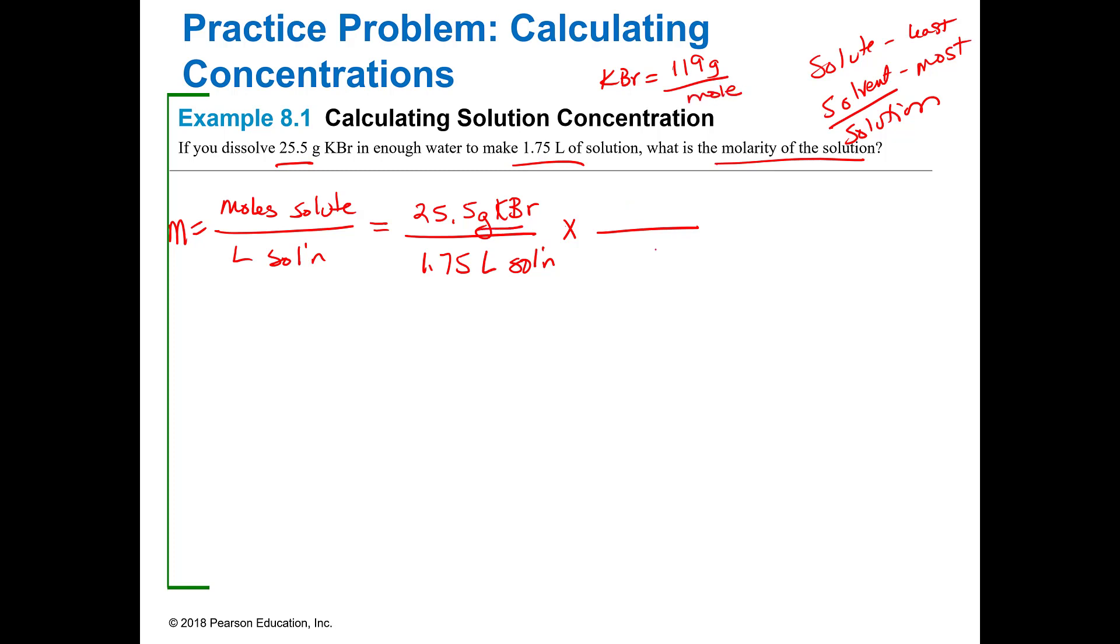So I've got grams of KBr here and I've got to get rid of that. There's 119 grams of KBr in one mole of KBr. So I can now cancel grams of KBr. I have liters on the bottom which is what I want, and so I now have moles over liters. Now all I have to do is the math and I'm going to get 0.122 moles of KBr per liter.